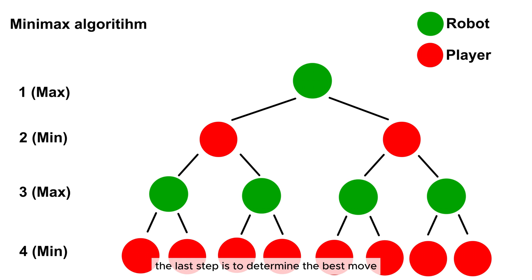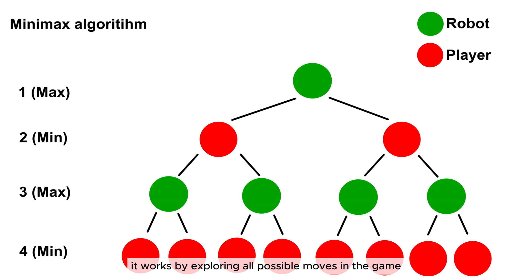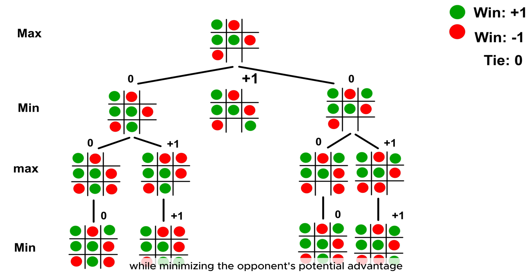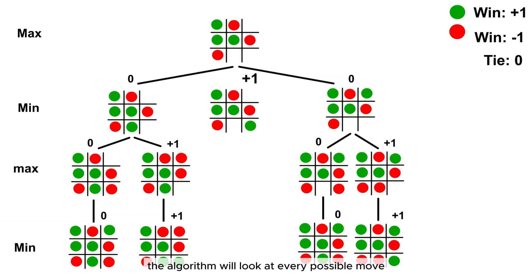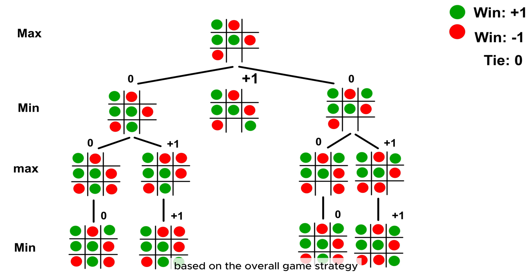The last step is to determine the best move for the robot arm. For this, I use the Minimax algorithm. The Minimax algorithm is a decision-making algorithm used in artificial intelligence and game theory. It works by exploring all possible moves in the game, simulating the outcome of each move, and choosing the one that maximizes the robot's advantage while minimizing the opponent's potential advantage. At the top of the pyramid, you have the current state of the game board. The algorithm evaluates the outcomes of all possible moves and assigns points to each solution, ensuring it chooses the most advantageous option based on the overall game strategy.